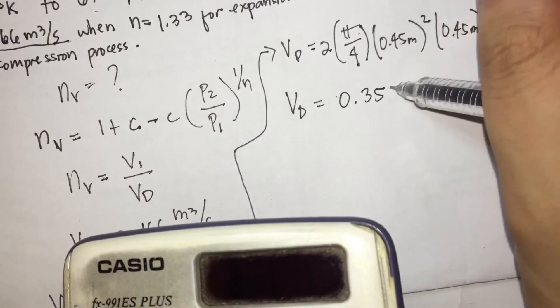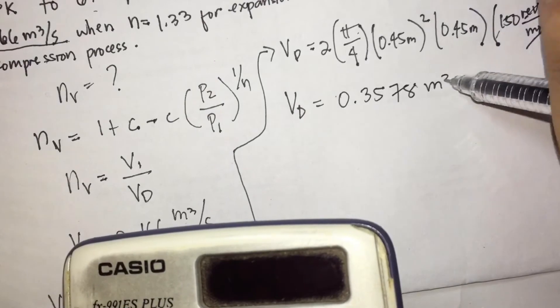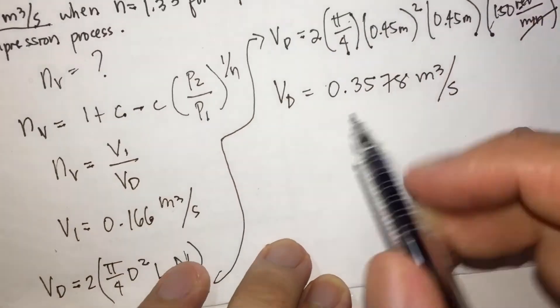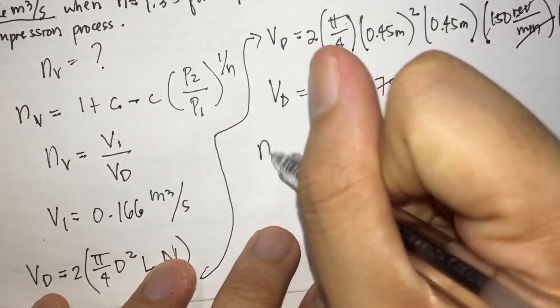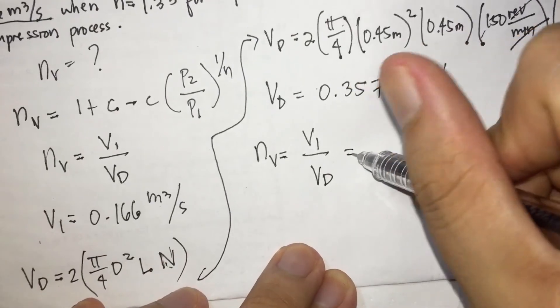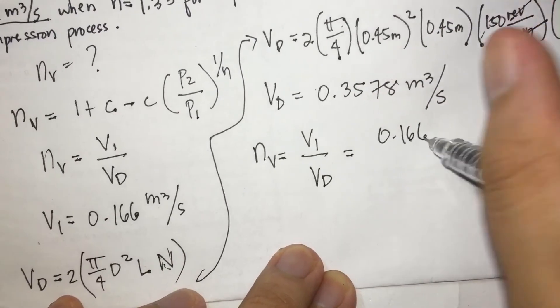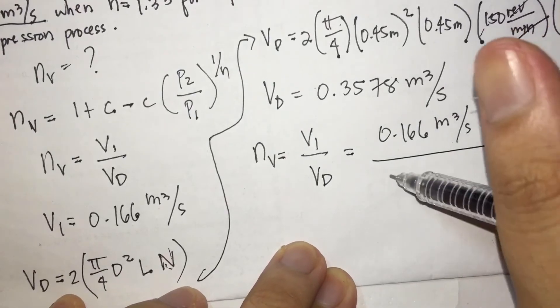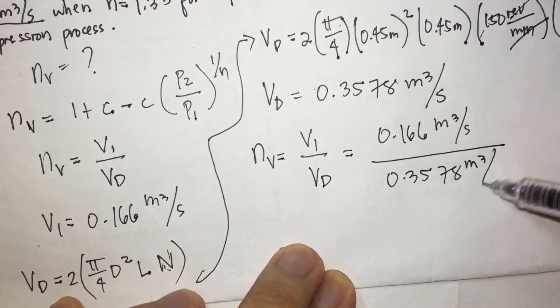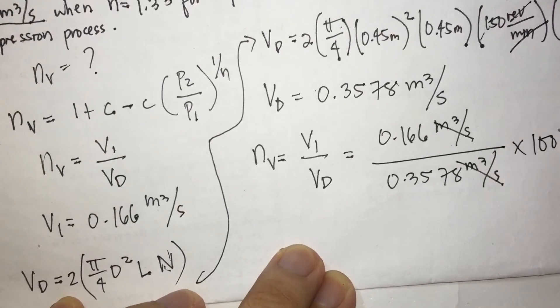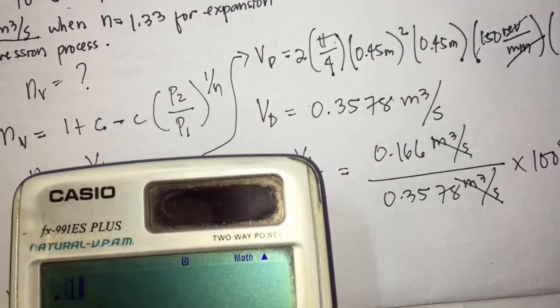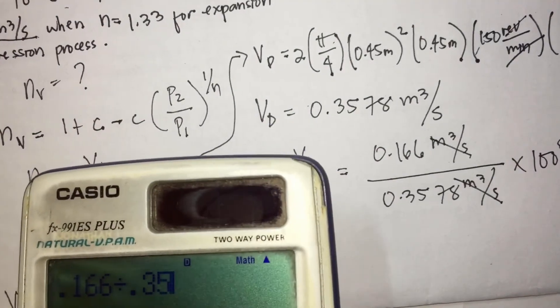Okay, so we have VD, we have V1. So therefore we can compute volumetric efficiency equals V1 over VD. So V1 is 0.166 meter cube per seconds over VD 0.3578 meter cube per seconds, then times 100%. So that is 0.166 divide 0.3578.